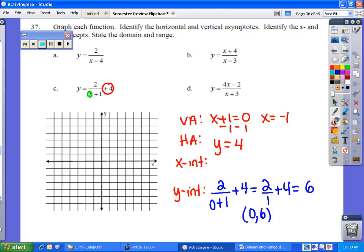Now your x intercept is a little different. Since we have no numerator to set equal to zero, we have to set the whole thing equal to zero. So the first thing that you do is subtract four on both sides, and you're left with two over x plus one equals negative four.